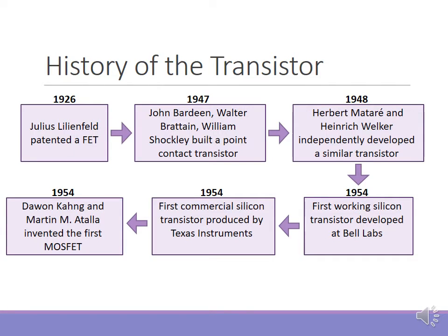A quick history of the transistor: the field effect transistor was first patented by Julius Lilienfeld in 1926. Unfortunately, he didn't have the means to fabricate it at the time, but he proposed it. Then in 1947, three engineers at Bell Labs had built the point contact transistor and successfully patented it. Independently, Herbert Matare and Heinrich Welker had developed their own point contact transistor. A few years later at Bell Labs, they developed the first working silicon transistor.